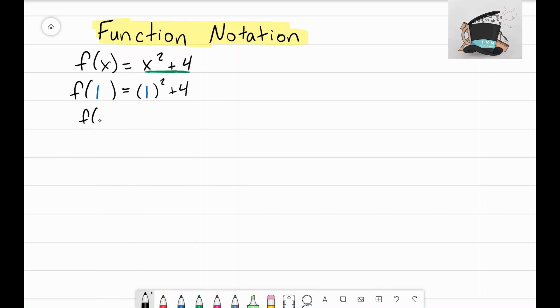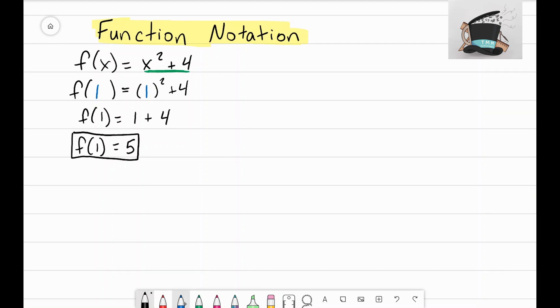Now let's solve this function. I have f of 1 equals, well, 1 squared is the same as 1 times 1 and that is 1. I bring down the plus 4, and 1 plus 4 equals 5. So f of 1 equals 5. What that tells me is that when my input is 1, f is 5.